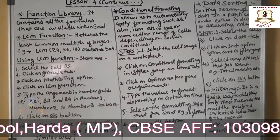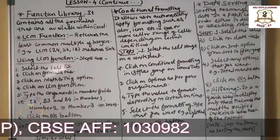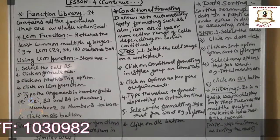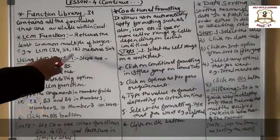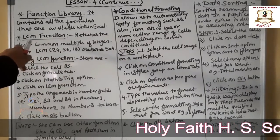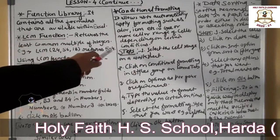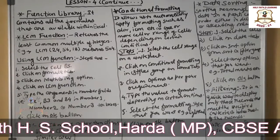For example, LCM of 24, 56, and 18. If we apply the LCM function, then it will return 504. The result will be 504.